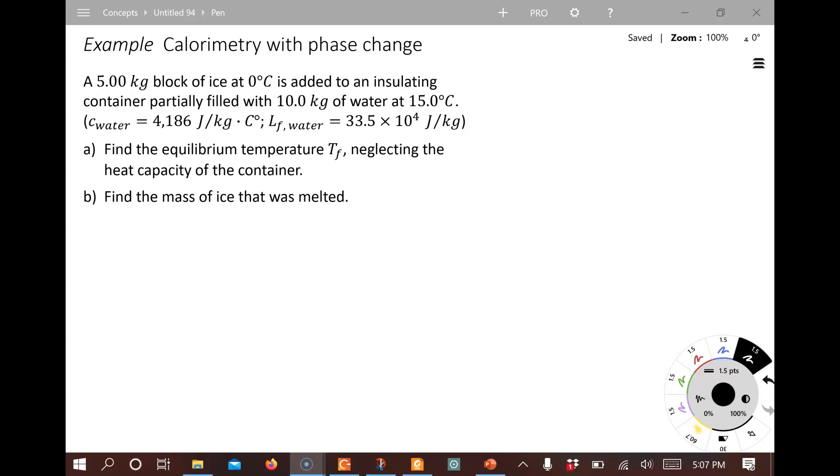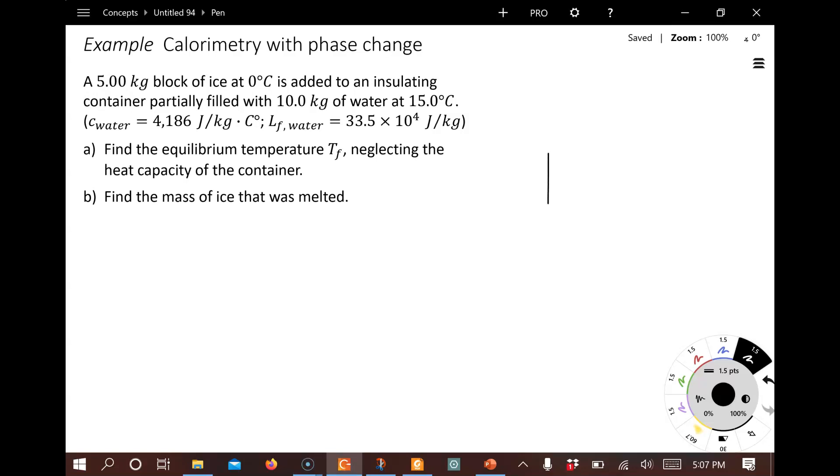It's kind of hard to exactly predict what's going to happen here, so we're going to have to do a little bit of investigation. The heat capacity of the container is negligible, so we've only got two objects that are exchanging heat, the ice and the water. Let's go ahead and draw a temperature scale real quick here. We begin down here with the ice initial, 0 degrees Celsius, and we've got the water initial at 15 degrees Celsius. The equilibrium temperature could be anywhere in between here. Somewhere here we're going to have some final temperature for both of these.